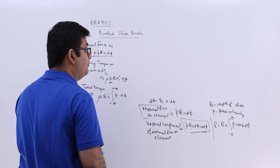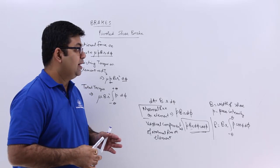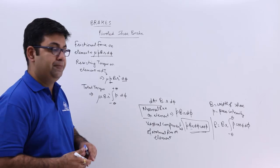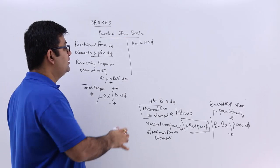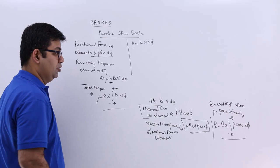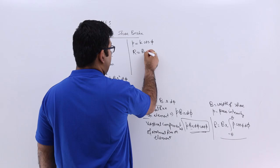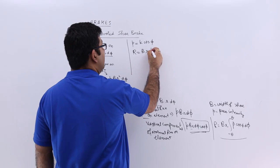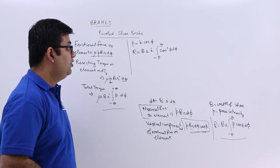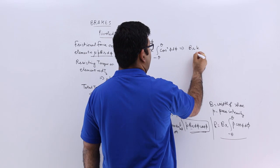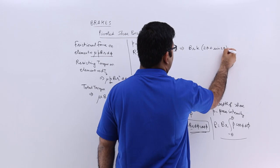Now let's assume the condition prevailing in the brake is uniform wear. For normal wear condition, the pressure p equals k·cos phi. Substituting this into the normal reaction equation, R equals b·r times the integral from minus theta to plus theta of k·cos²phi·d phi. Integrating this gives R equals b·r·k times (2 theta + sin 2 theta) upon 4.